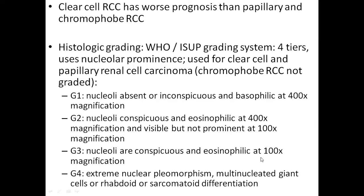G3 means the nucleoli are clearly conspicuous even on low power, but there is no nuclear pleomorphism or sarcomatoid differentiation. In G4, the nucleoli are completely visible even at 10x, with complete nuclear pleomorphism — differences in sizes and shapes of the nuclei — and sometimes there is rhabdoid or sarcomatoid differentiation, which is absent in G3. This is the key factor differentiating G3 from G4.